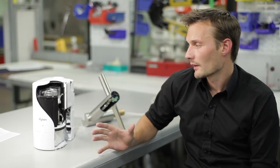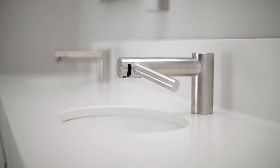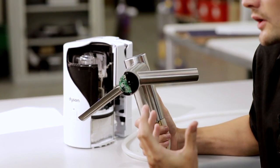The Dyson Airblade tap hand dryer solves this problem completely, so you wash and you dry all in one place. It generates two sheets of air which actually dry your hands.